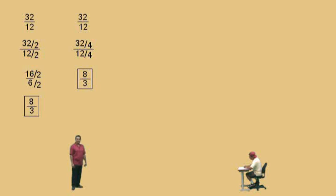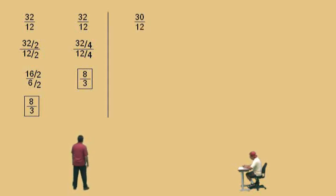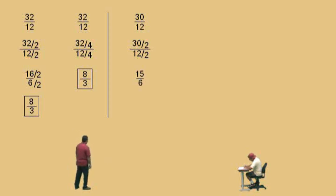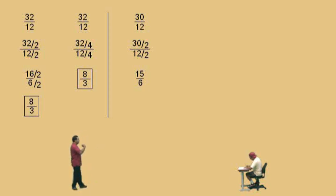Let's do another one. Alright Charlie, here we go. Thirty divided by twelve. Now, once again Charlie, we're going to divide by twos, because we're too chicken. We're going to divide by two. What's thirty divided by two, Charlie? Fifteen. And twelve divided by two? Six. So we divided both the top and the bottom by two. Remember, whatever you do to the top, you must do to the bottom. You can multiply numbers to top and bottom, and you can divide numbers to top and bottom. That's all you can do.